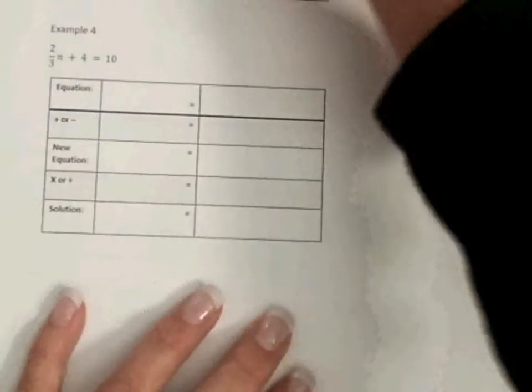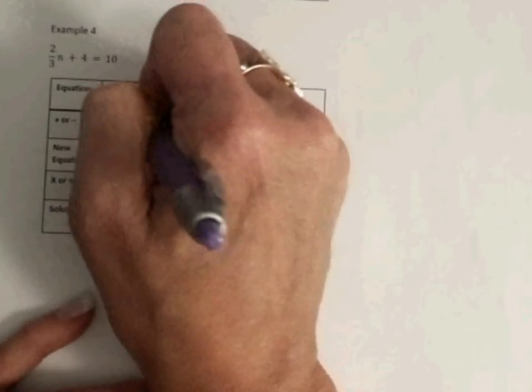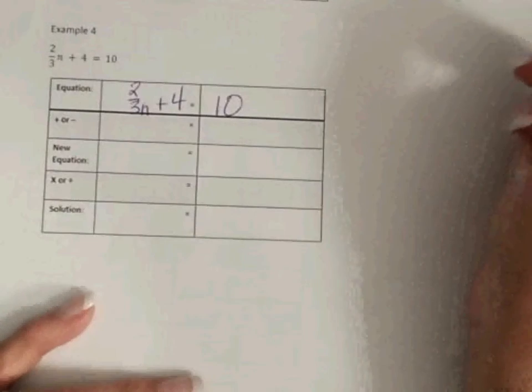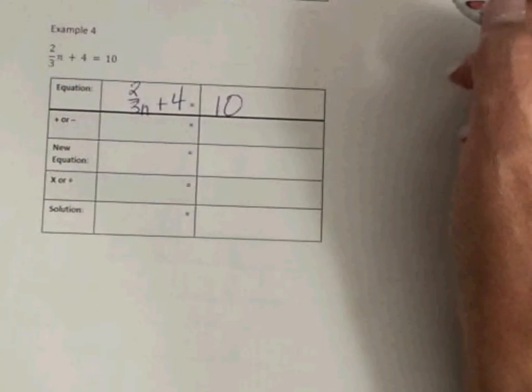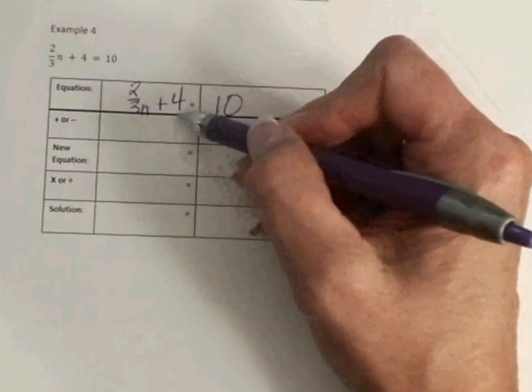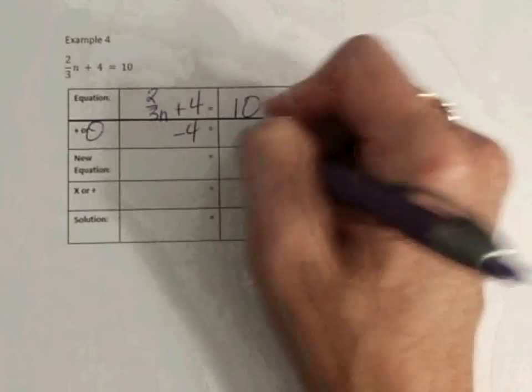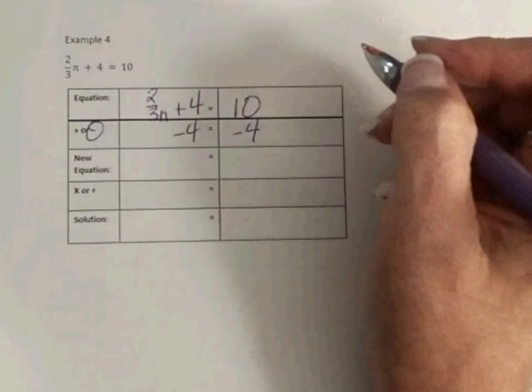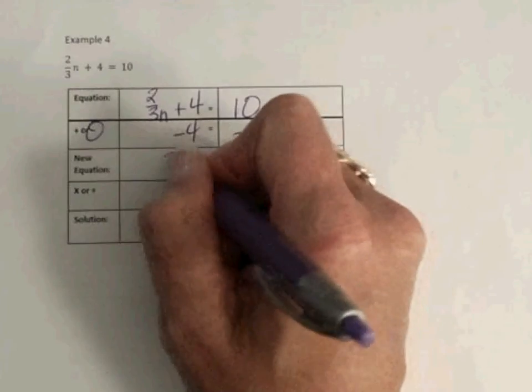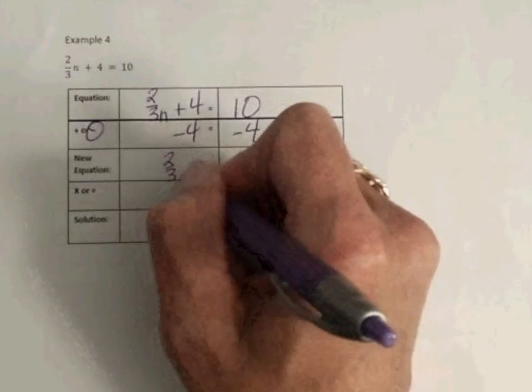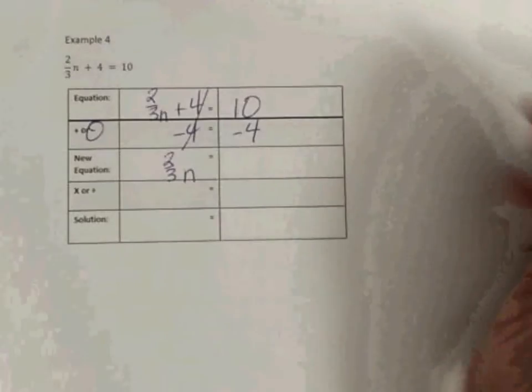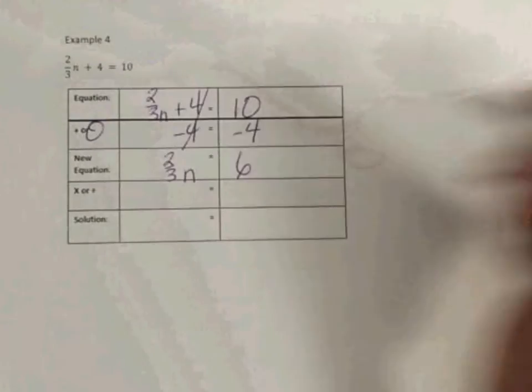Our last example: 2 thirds n plus 4 equals 10. Let's not even worry about the variable right now. We need to get it by itself, so we need to get rid of this positive 4. They added, so we're going to subtract. Remember to do it on both sides of the equation. So all we have left over here is 2 thirds n. This cancels out. Those are 0 pairs. Equals 6.